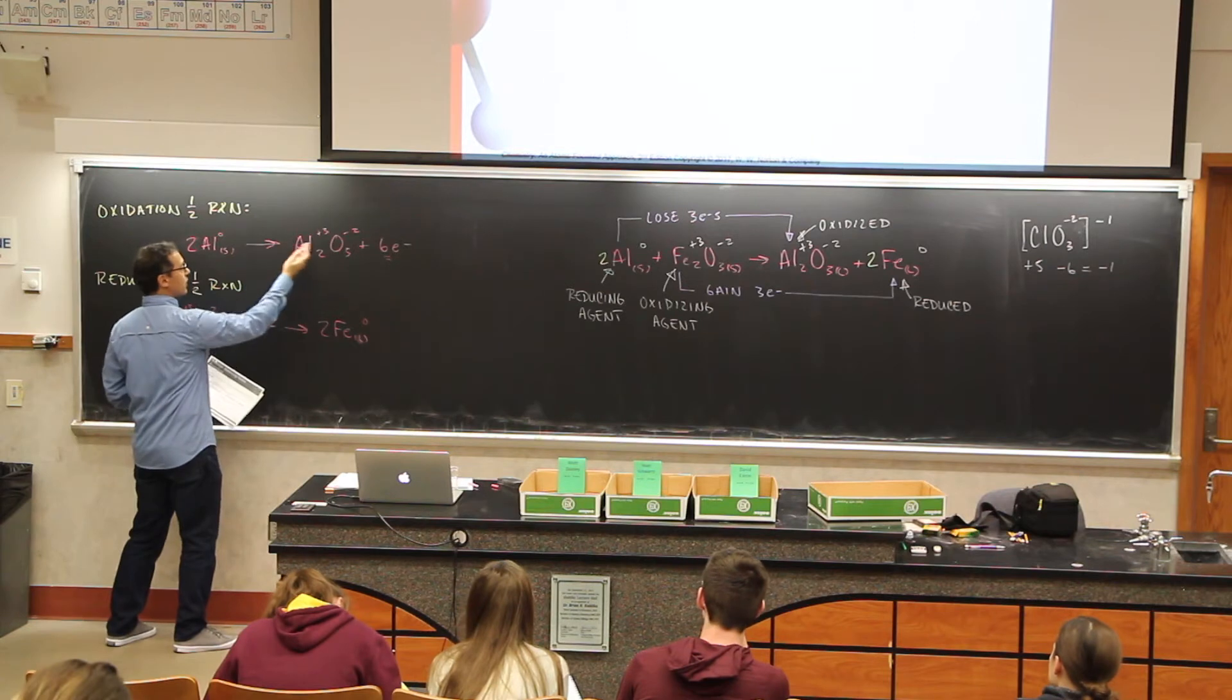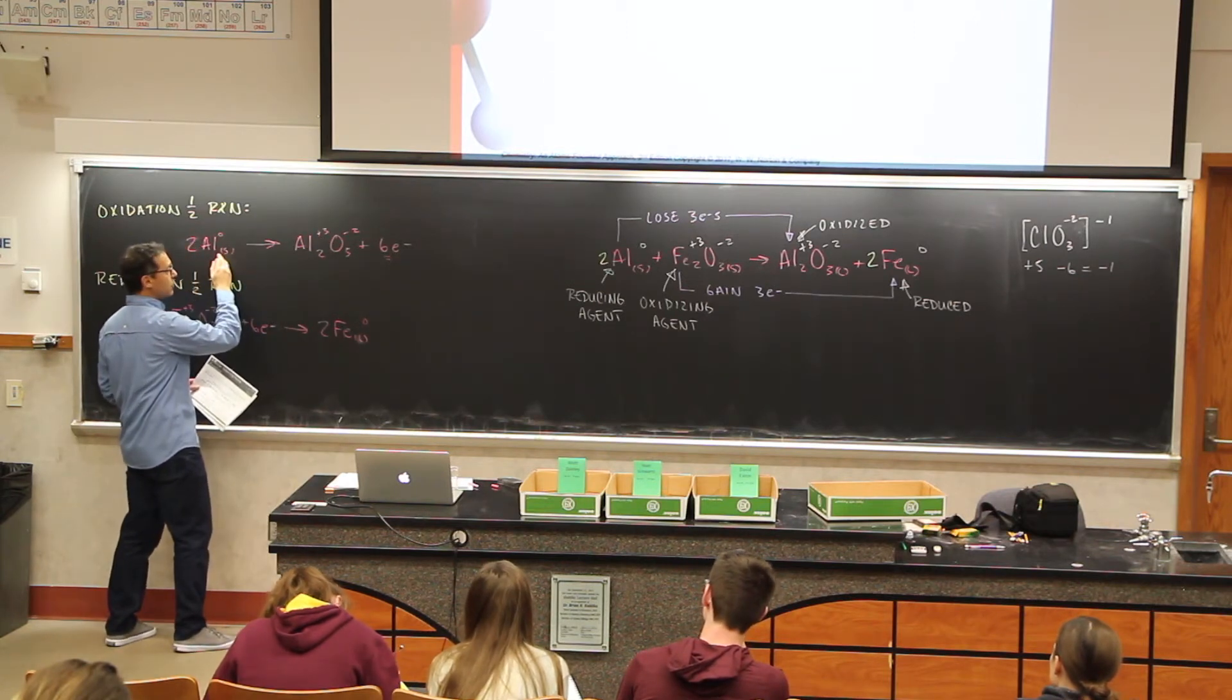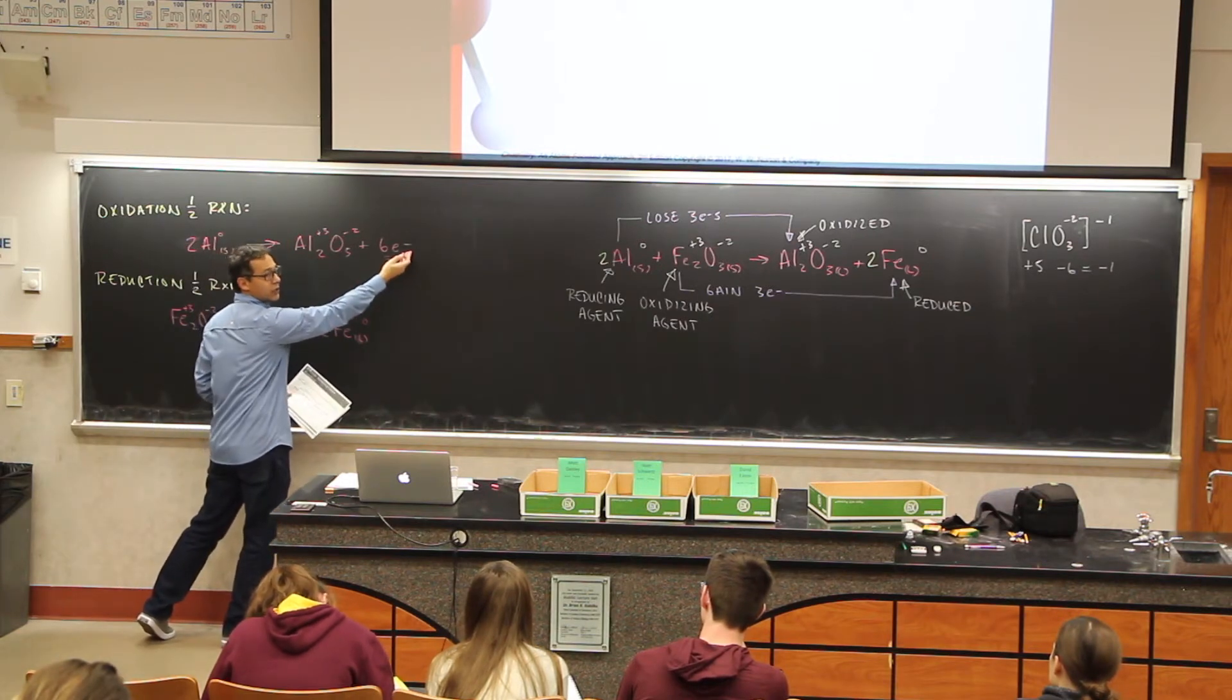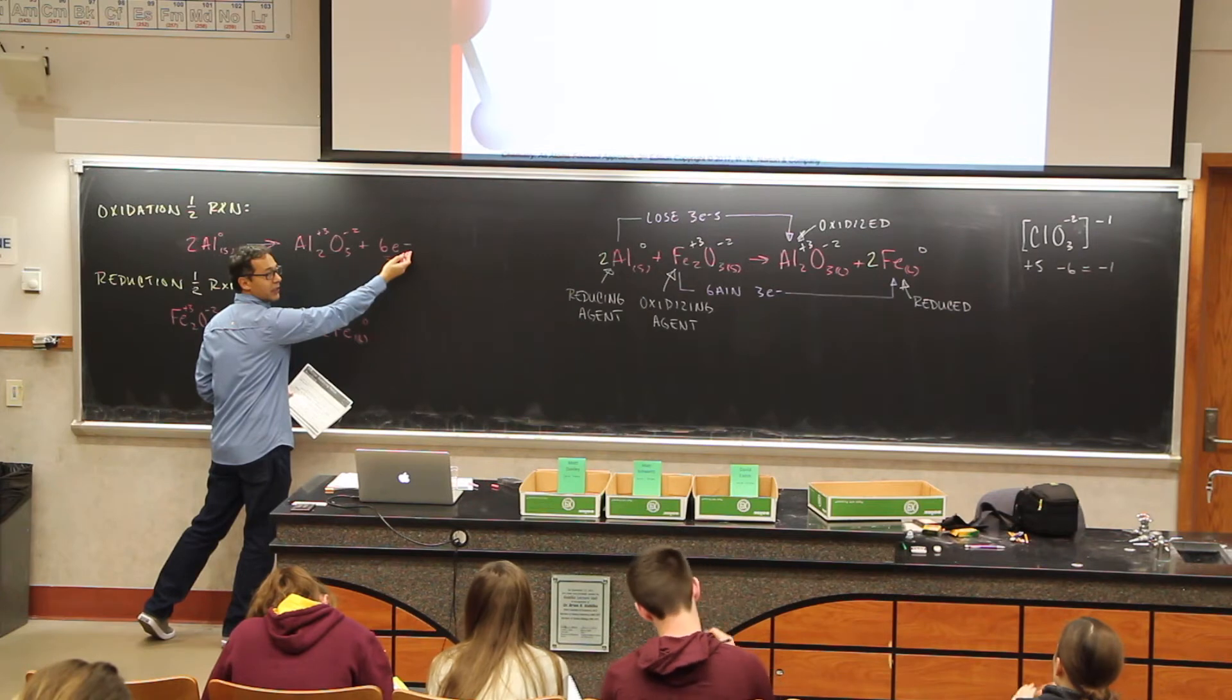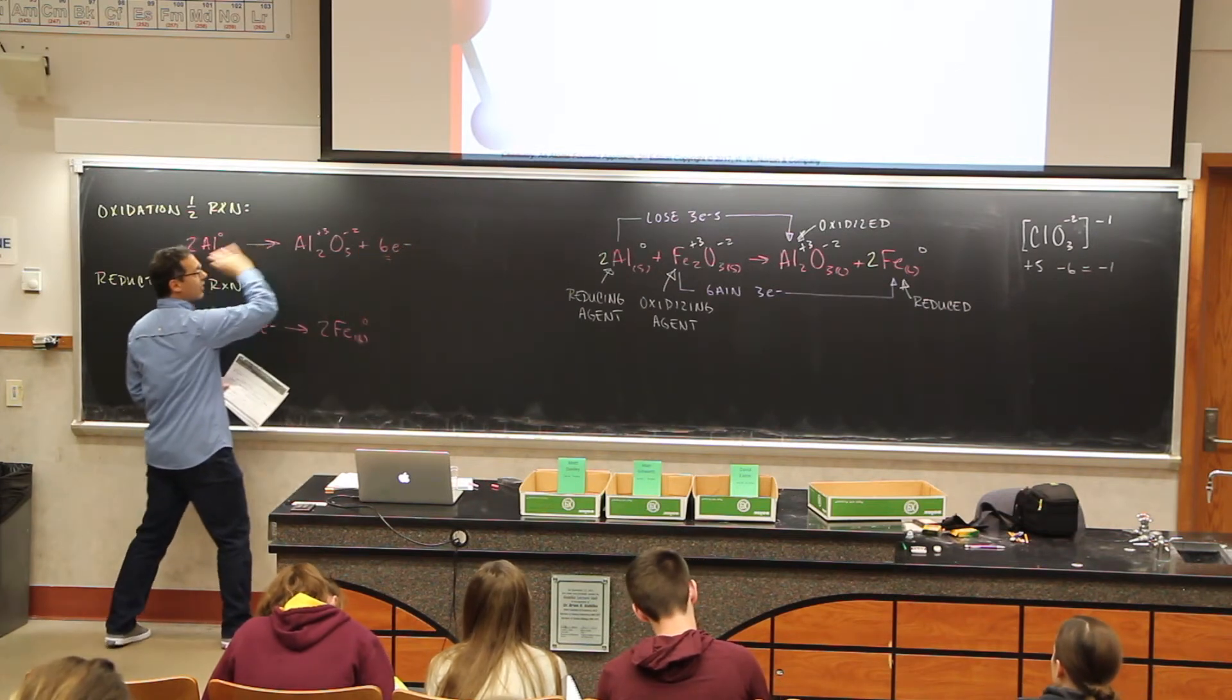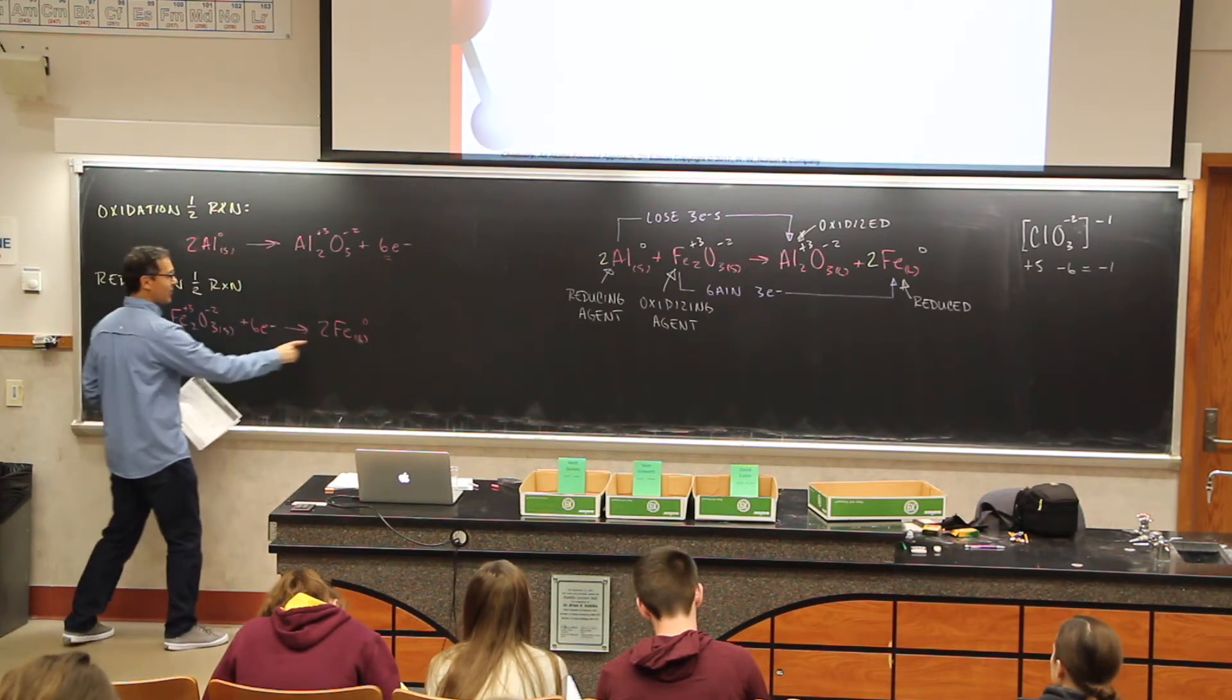It has lost, each one has lost three electrons, and there's two of them. So two times three is six. So there's six electrons with a negative charge that are apart. They've left here. They've left and gone somewhere else. Where they've gone is over to here.